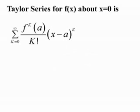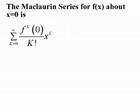A Taylor series for f of x about x equals 0 is the sum from k equals 0 to infinity of the kth derivative of the function evaluated at 0 over k factorial times x to the k. Similarly, a Taylor series for f of x about x equals a is the sum from k equals 0 to infinity of the kth derivative evaluated at a over k factorial times x minus a to the k.